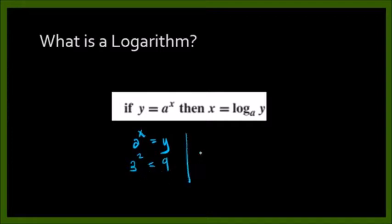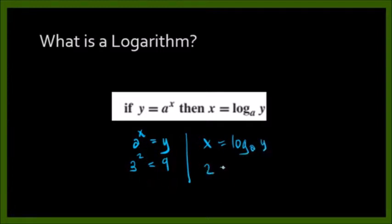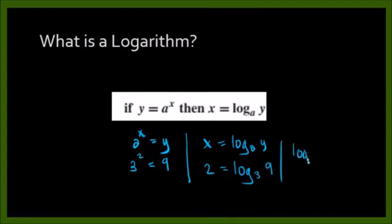The logarithm is the inverse of the exponential function. So if x is equal to log base a of y, then in our example, x is 2, the base is 3, and y is 9. So the log base 3 of 9 is equal to 2. Basically, it's just the inverse of our exponential function.